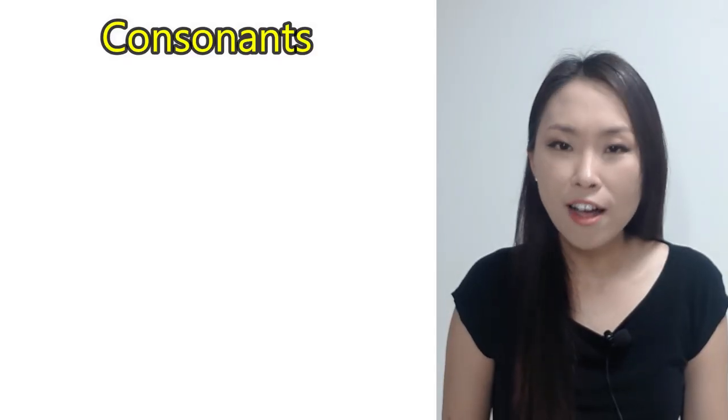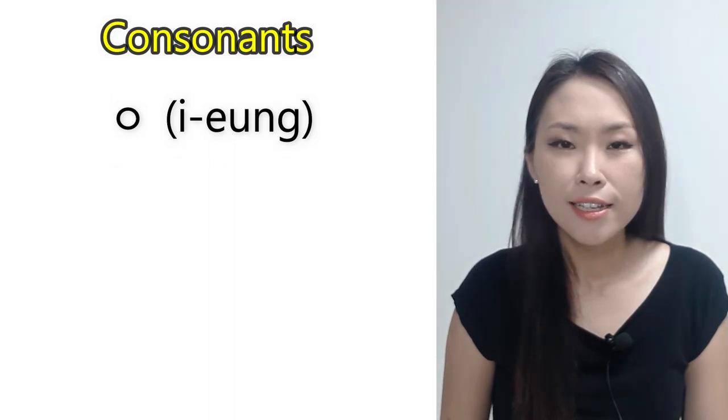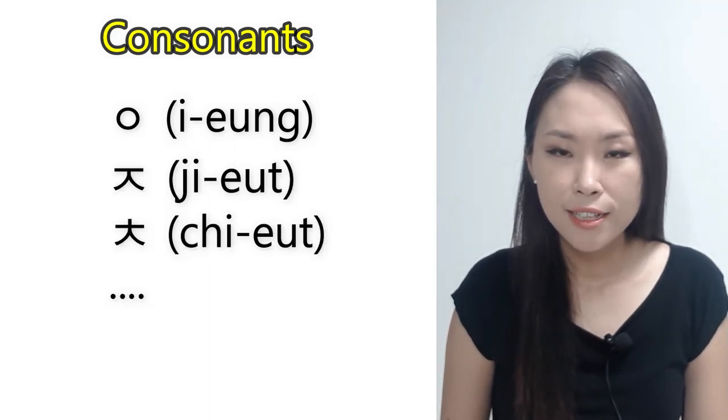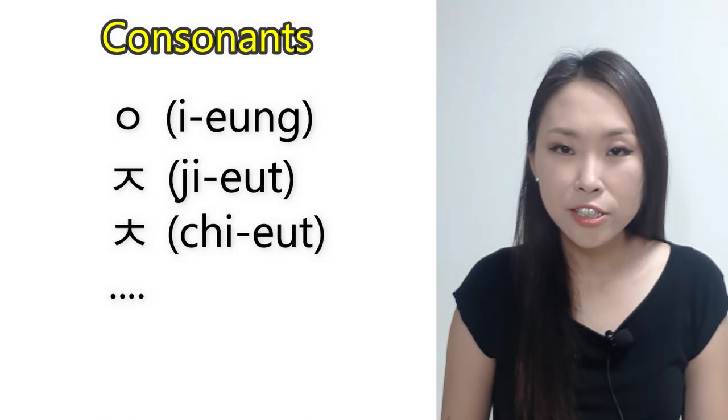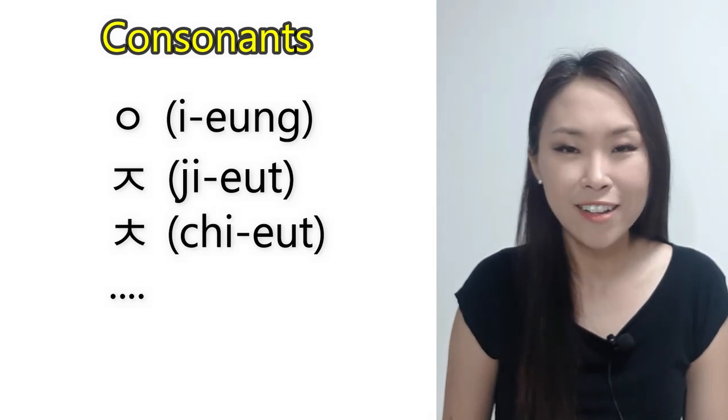Every consonant in Korean has a name like 이응, 지읒, 치읓, and so on. But, as a beginner, I want you to remember what they sound like rather than the name of each consonant. Okay?